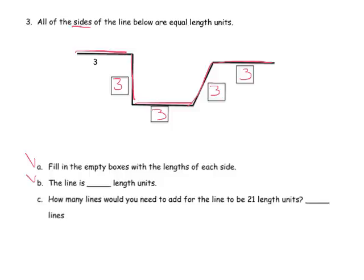B, the line is how many length units. So we're calling them length units instead of centimeters because we don't know. It's just this arbitrary thing. So we're calling them 3 units. And so we have to add those up together.